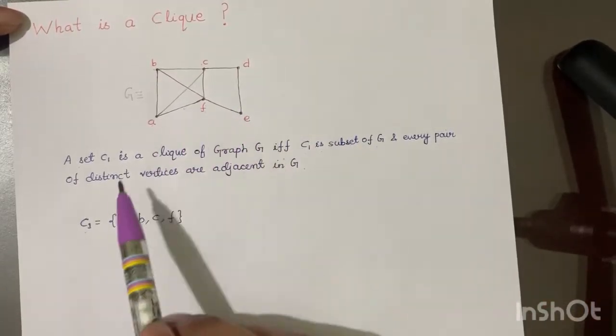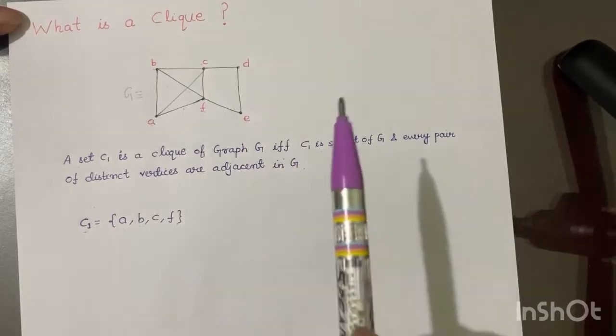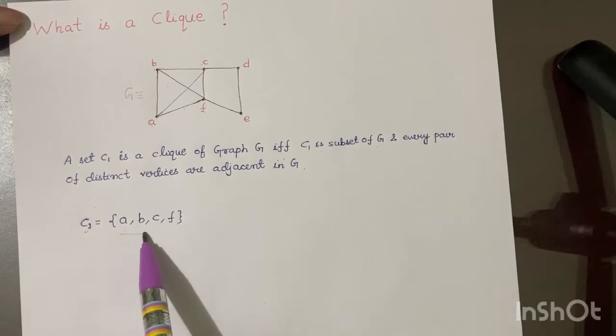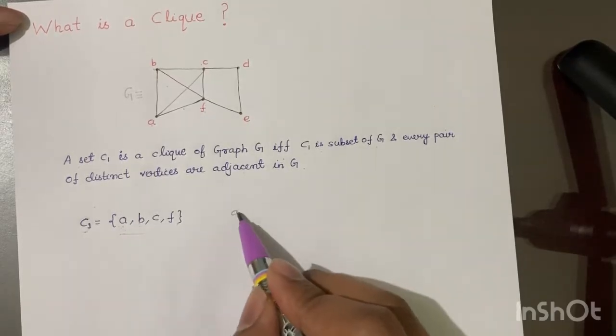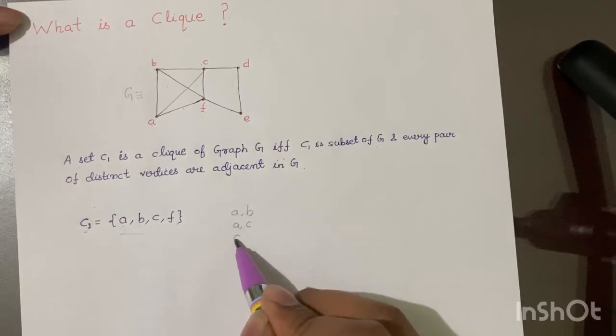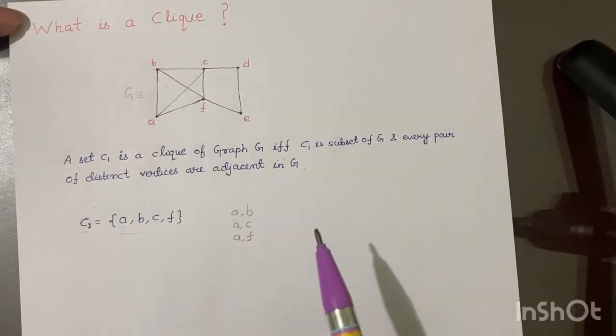Why? Number one, C1 is a subset of G. Second point, every pair of distinct vertices in C1. What can be the distinct vertices? A and B, A and C, A and F. So as you can see, A-B, A-C, and A-F, they are adjacent to each other in the graph G.